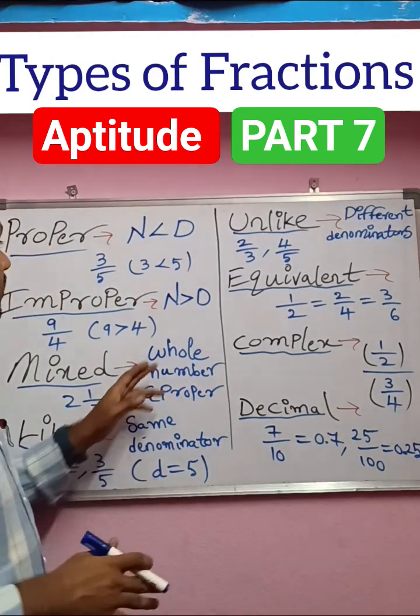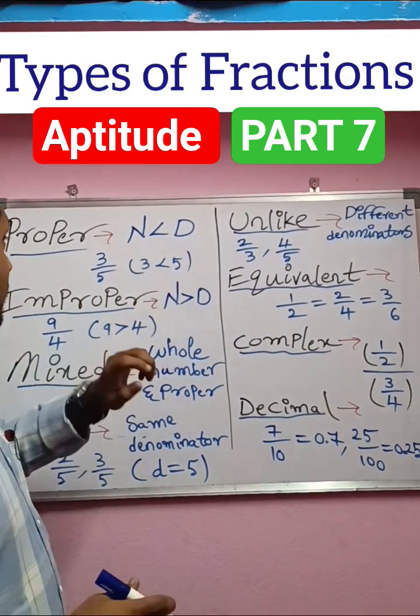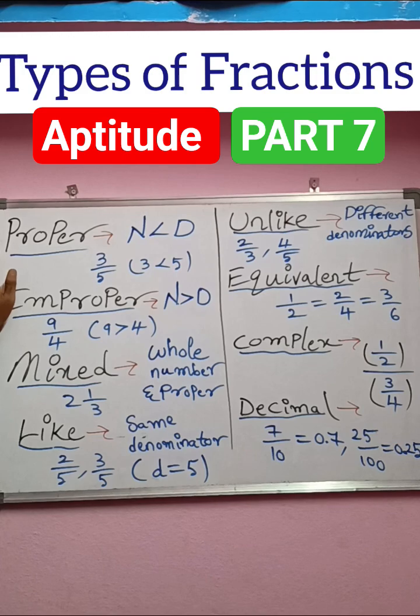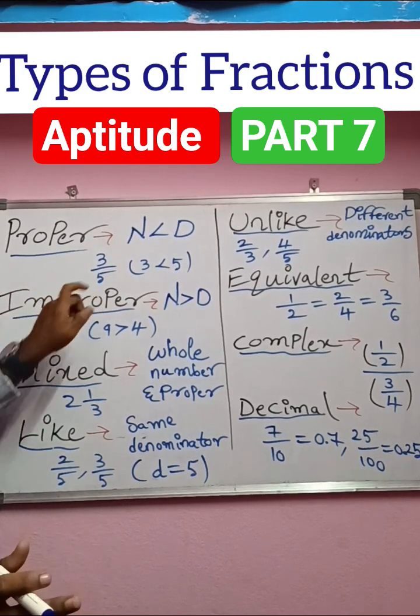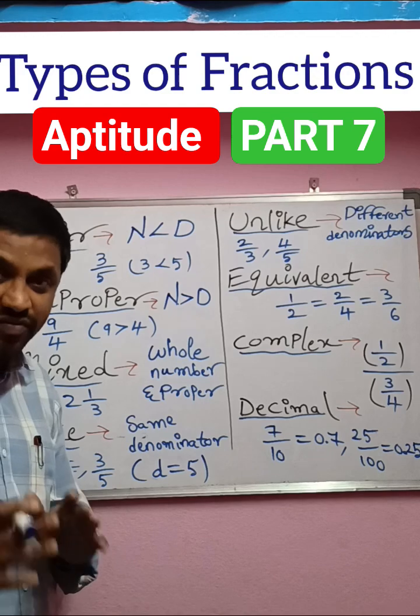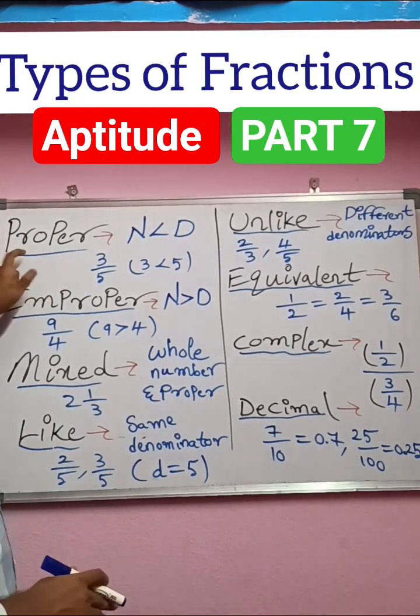So first one is: numerator is less than denominator, then it is said to be proper fraction. For example, 3 by 5. 3 is less than 5, it is said to be proper fraction.